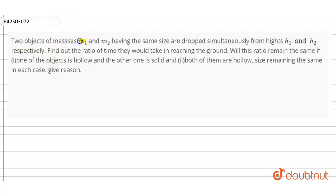Two objects of masses m1 and m2 having the same size are dropped simultaneously from heights h1 and h2 respectively. Find out the ratio of time they would take in reaching the ground. Will this ratio remain the same if one of the objects is hollow and the other one is solid, and secondly, both of them are hollow, size remaining the same? In each case, give reasons.